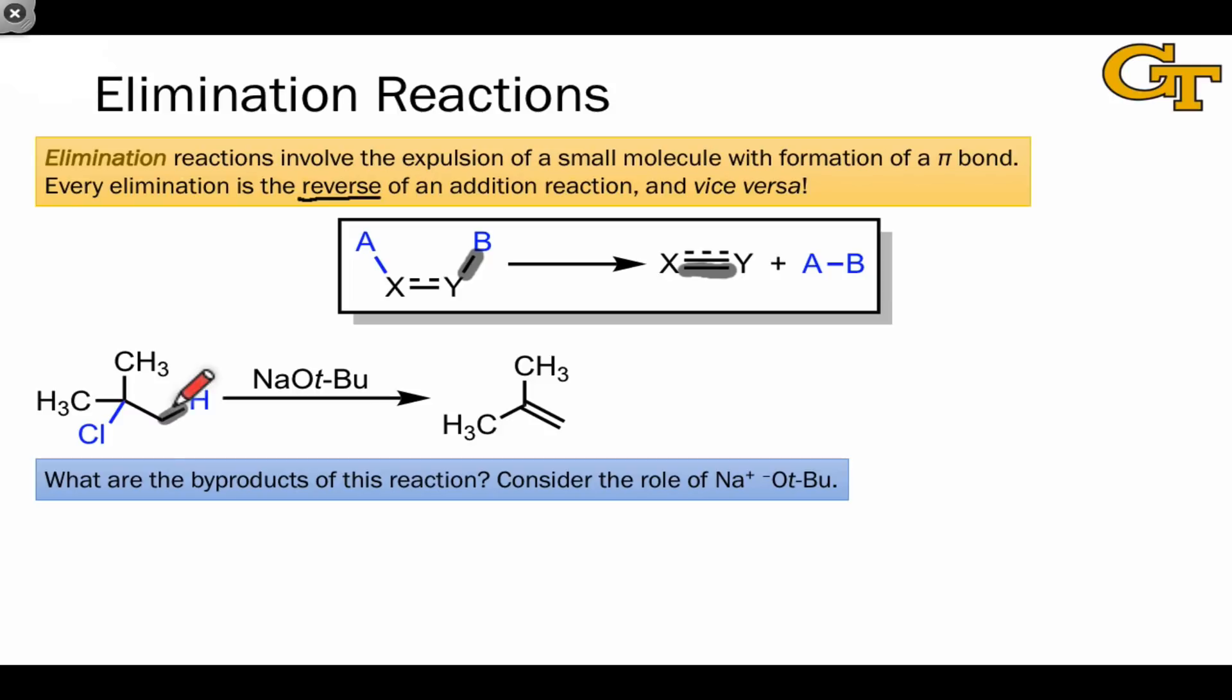And the most likely source to take that proton away is the tert-butyl anion. So that's one of our byproducts right there, tert-butyl alcohol. The proton, which we would hypothetically find in HCl, is incorporated into this byproduct.